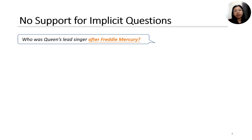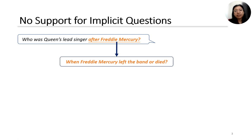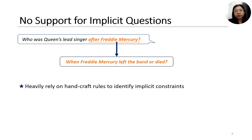Another more challenging situation is questions with implicit temporal constraints, like: Who was Queen's lead singer after Freddie Mercury? The systems need to find out when Freddie Mercury left the band or died to compute the correct answer. Existing methods are not oriented toward this type of question, or heavily depend on handcrafted rules to identify the implicit constraints.